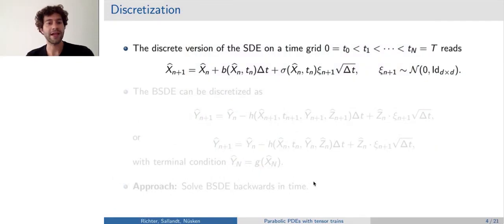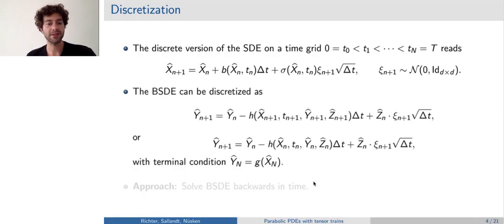So, in order to get an implementable algorithm, we need to discretize our stochastic processes, which we do on a time grid from zero to capital T, on n plus one grid points, where we essentially use this Euler-Maruyama scheme, where this Xi is a standard normally distributed random variable that corresponds to the Brownian motion term. The BSDE can be discretized in two ways, depending on whether we actually choose the right or the left endpoint of this nonlinear function H. In the first line, you can see the right endpoint, and on the second line, you can see the left endpoint.